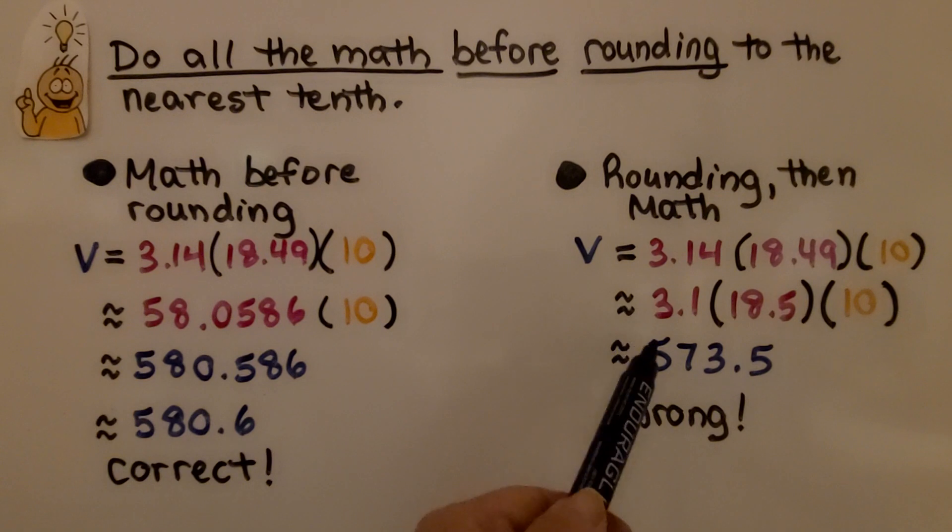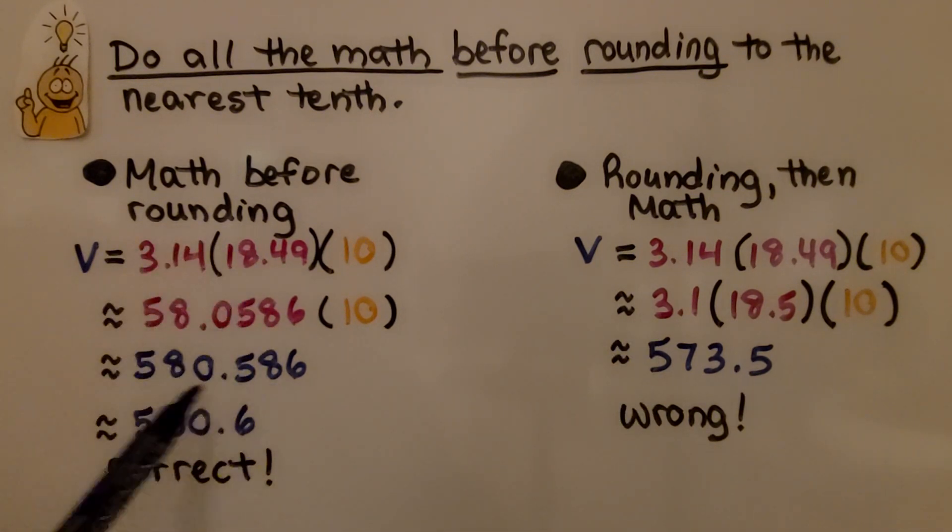That's not accurate. We need to multiply by all the decimal values. Then when we have the final product, then we round it to the nearest tenth.